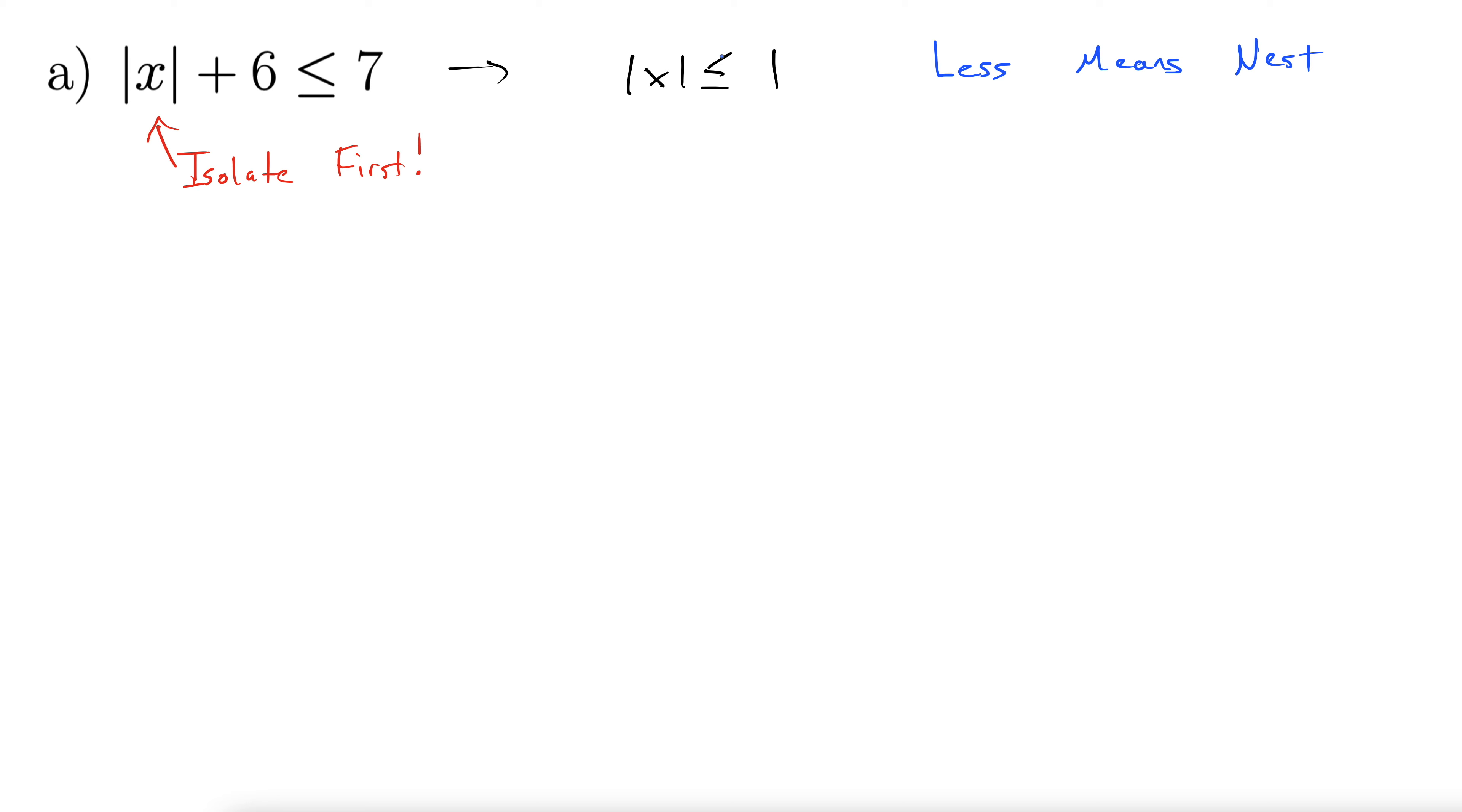And by that I mean this absolute value is less than 1. So we do negative 1, less than or equal to x, less than or equal to 1. And again, this works when the absolute value is on the left side of the inequality. So make sure it is before you try to use less means nest.